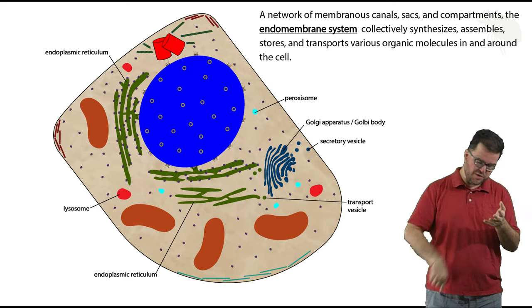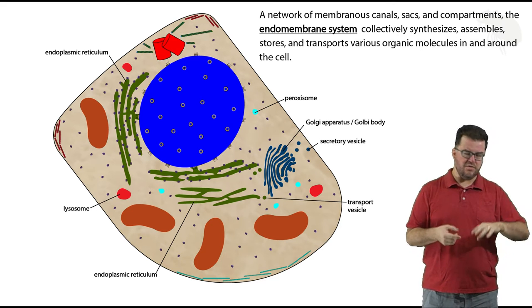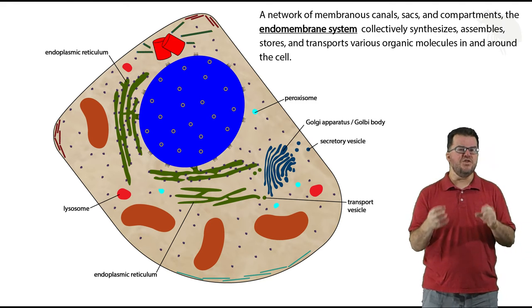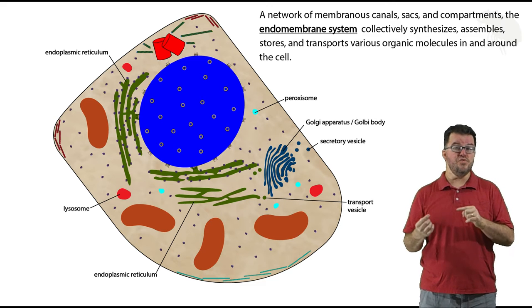These include things like the endoplasmic reticulum, the Golgi apparatus, lysosomes, transport vesicles, peroxisomes, secretory vesicles, and a number of other vesicles. Not all of those things strictly fit together in a continuum, but most of them do.